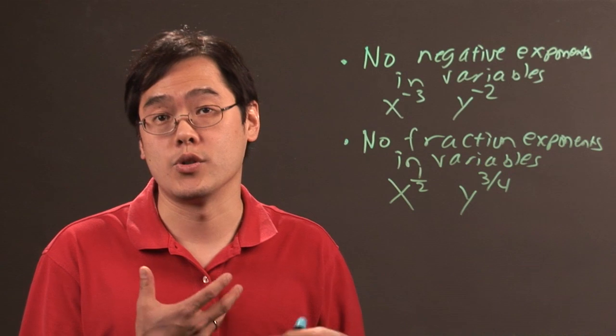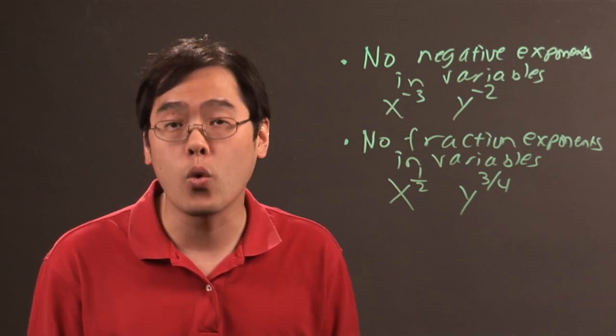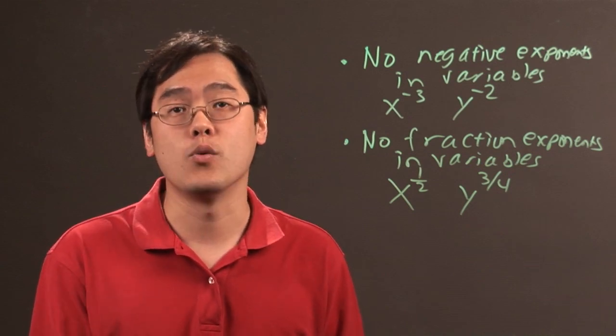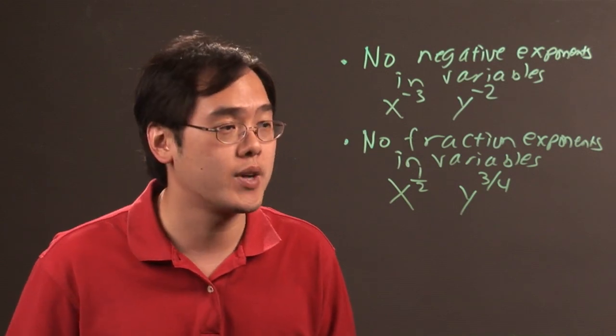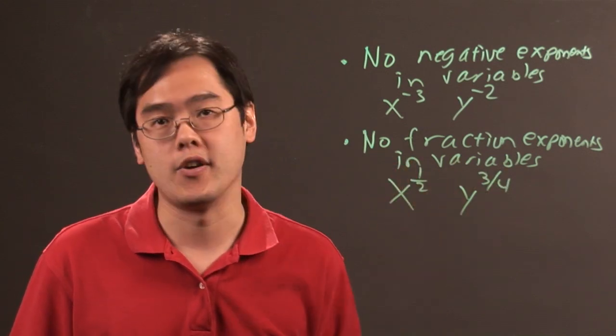Now you can raise numbers to those fraction powers, that's okay. If you have 3 to the 3 quarter power or 5 to the 1 half power, that's okay. But you cannot have any fraction exponents in the variables.